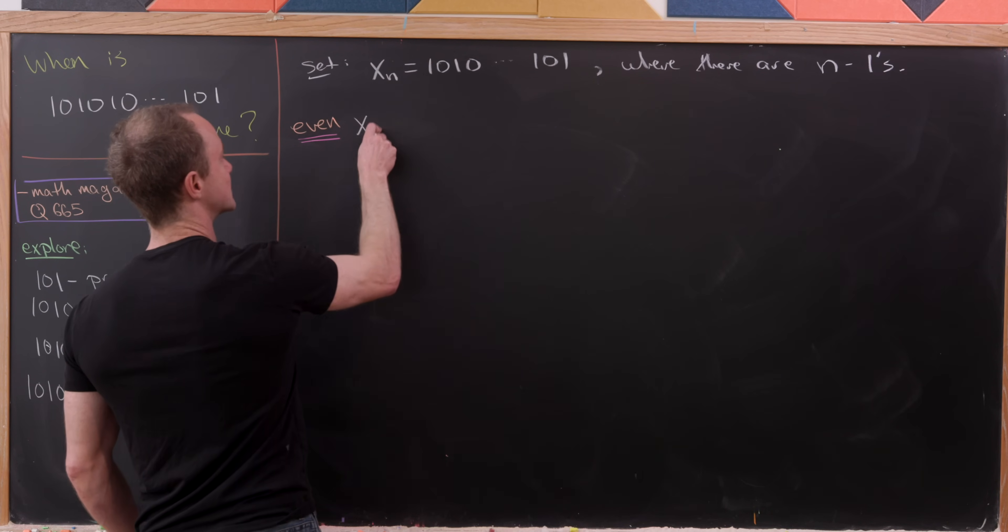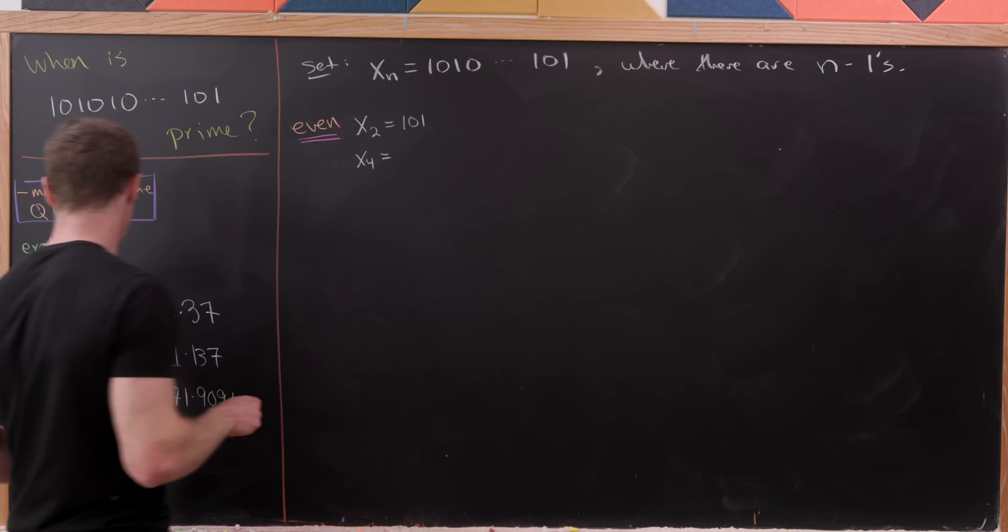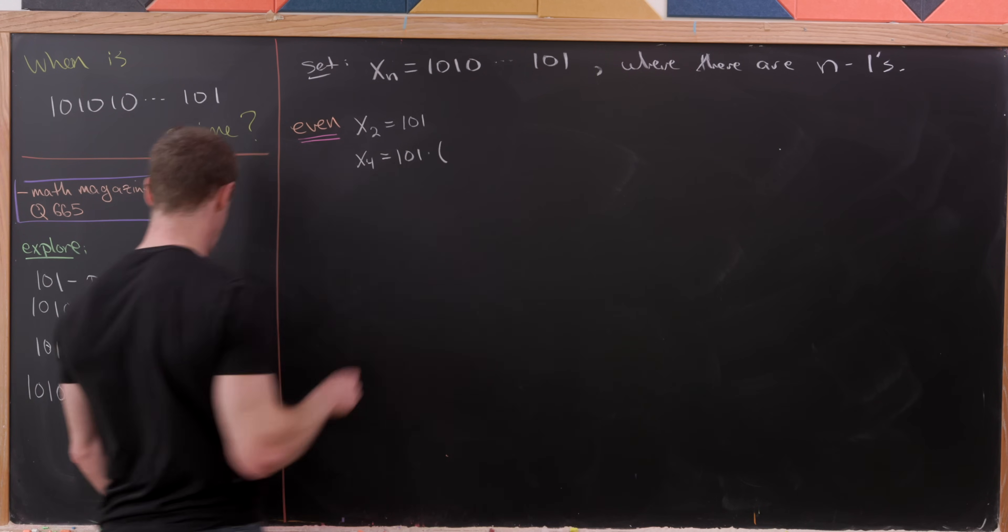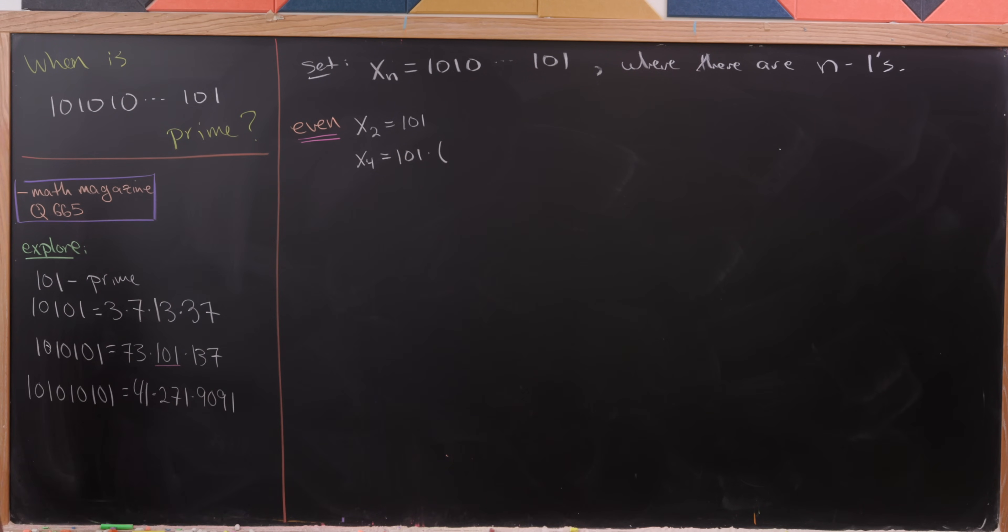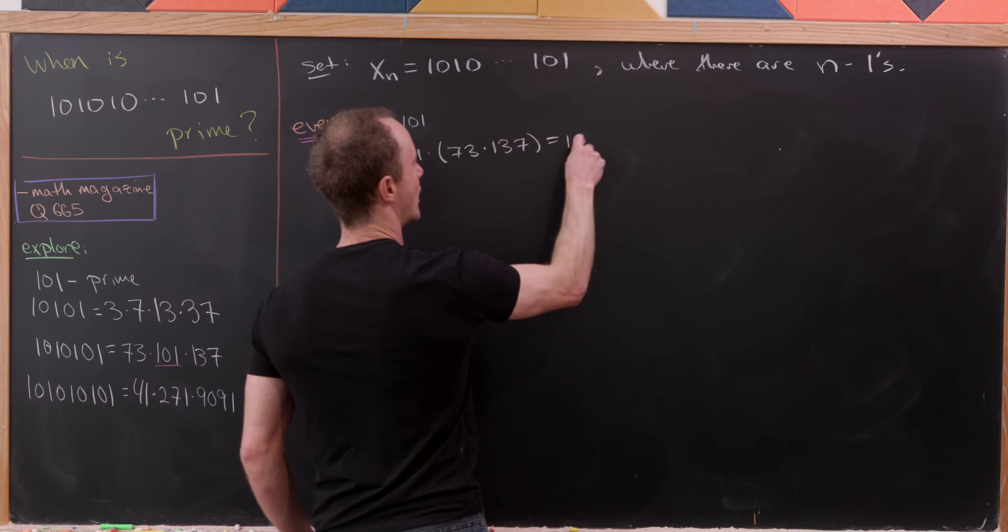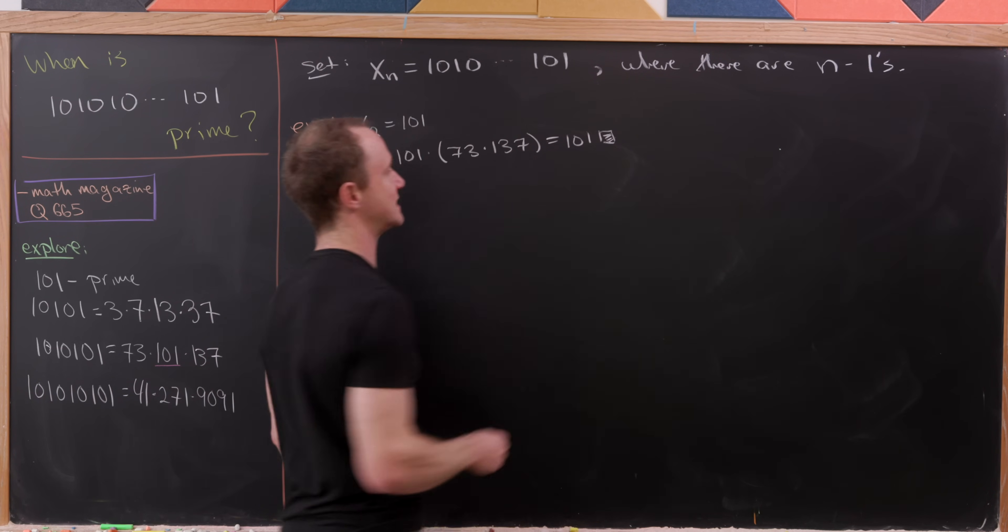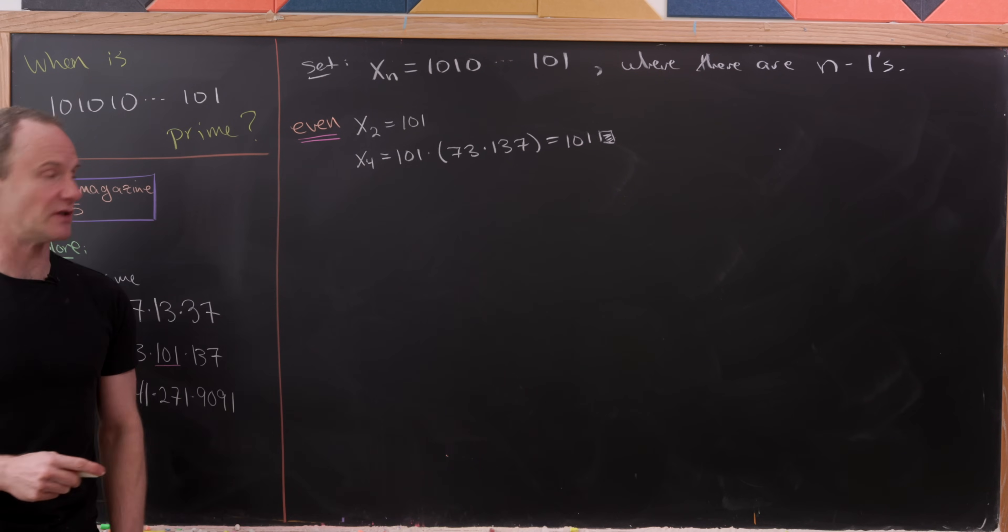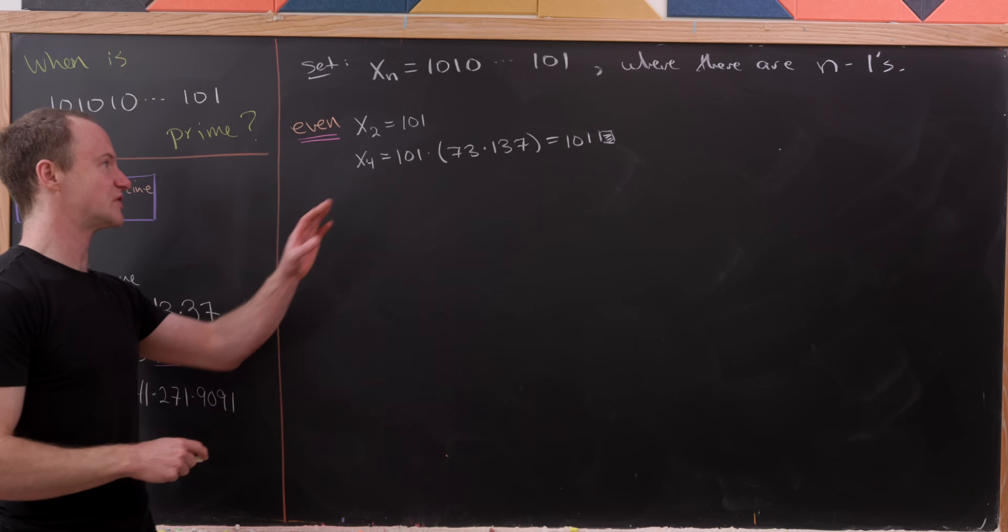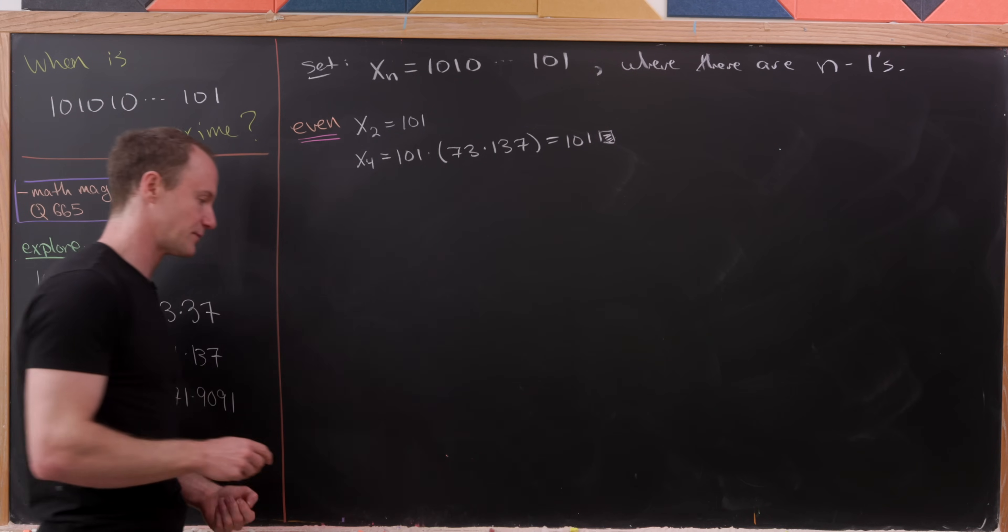And observe that there are two of those cases on the board right now. We see that x2 is equal to 101. And then we see that x4 is equal to 101 times 73 times 137. And the important thing here is that this is equal to 101 times some other number. In fact, that's the claim that we're going to prove to show that all of the rest of these even indexed x's are not prime.